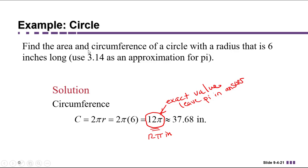But they asked us to use 3.14 as an approximation for pi. So you're going to multiply 12 times 3.14 on your calculator. And this, 37.68 inches, is what you get. And this is an approximation.